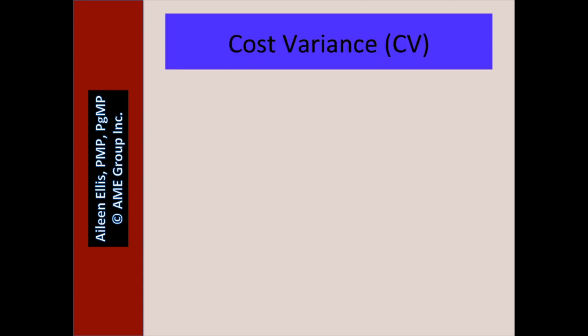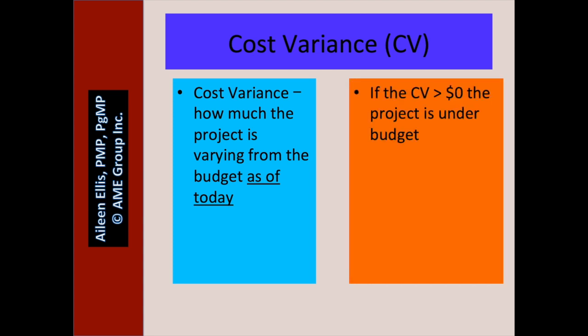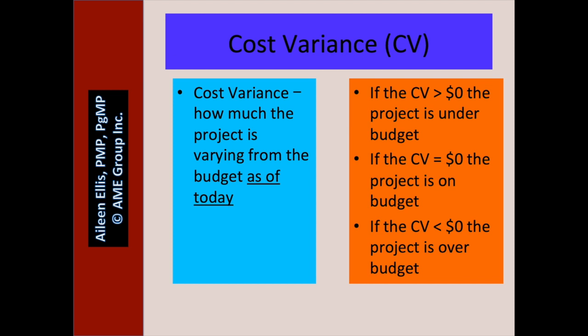We're going to begin with cost variance. In my own words, cost variance is how much the project is varying from the budget as of today. If the cost variance is positive, the project is under budget. If the cost variance equals zero, the project is on budget. And if the cost variance is less than zero, the project is over budget.